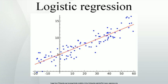Logistic regression. In statistics, logistic regression or logit regression is a type of probabilistic statistical classification model. It is also used to predict a binary response from a binary predictor, used for predicting the outcome of a categorical dependent variable based on one or more predictor variables. It is used in estimating empirical values of the parameters in a qualitative response model. The probabilities describing the possible outcomes of a single trial are modeled as a function of the explanatory variables, using a logistic function.